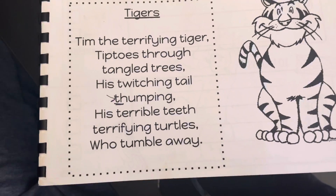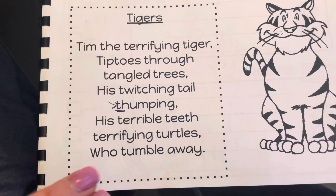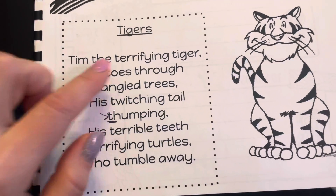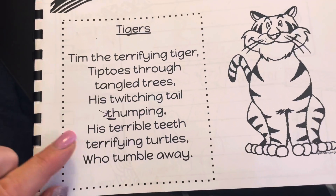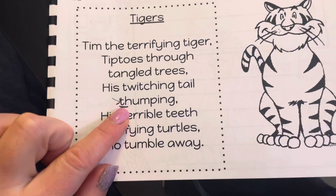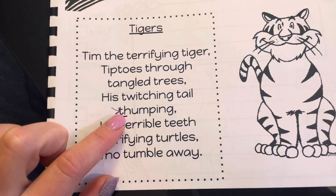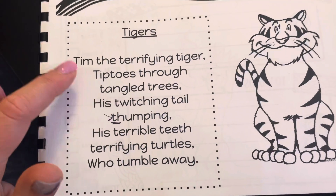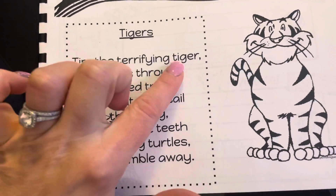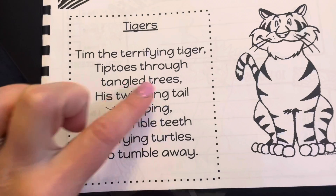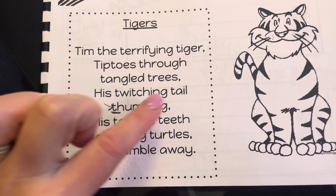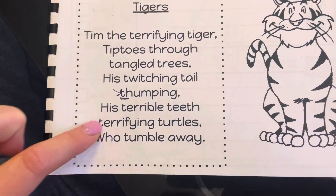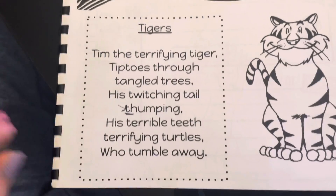Just so you know, the only T's that really count in this as alliteration are those hard T's: Tim, terrifying, tiger. Not 'thumping' because that's not a hard T, so that one doesn't count. I guess neither does 'through.' But you have Tim, terrifying, tiger, tiptoe, tangled, trees, twitching tail, terrible teeth, terrifying, tumble. That's a lot.